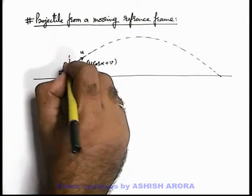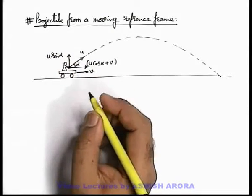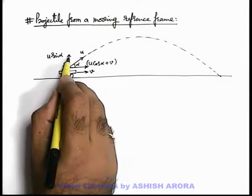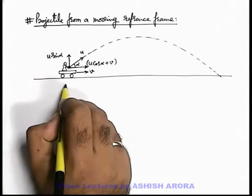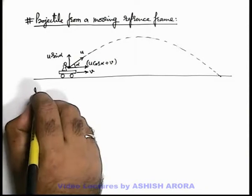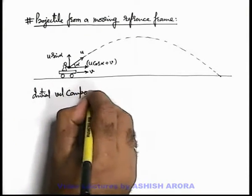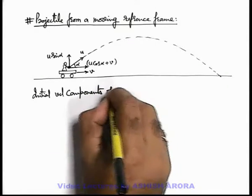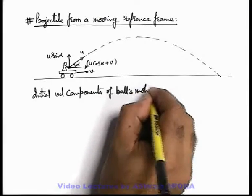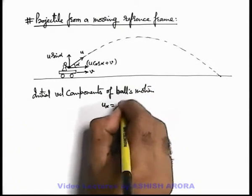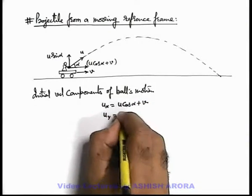In the vertical direction, the ball was imparted with velocity u sin alpha, and there was no other velocity because the cart is moving horizontally, not vertically. So the initial velocity components of ball's motion are: in the x direction it is u cos alpha plus v, and in the y direction it is u sin alpha.